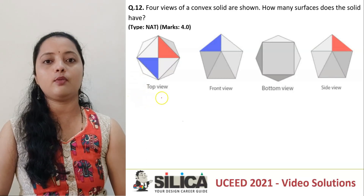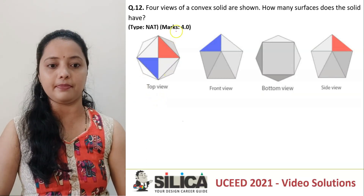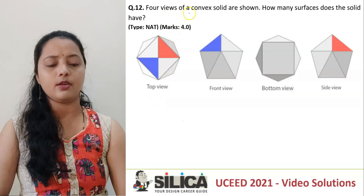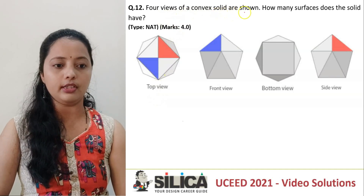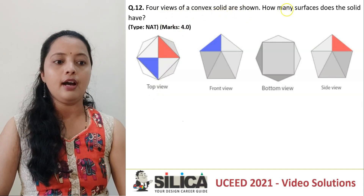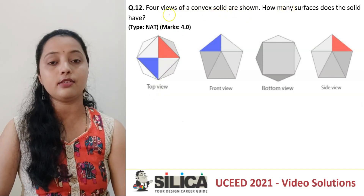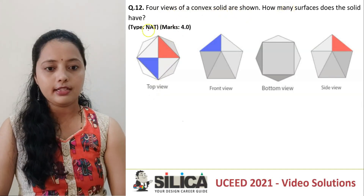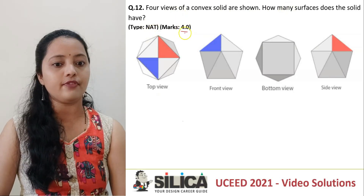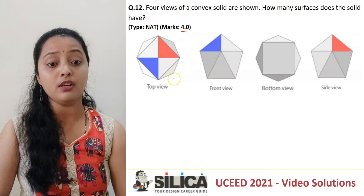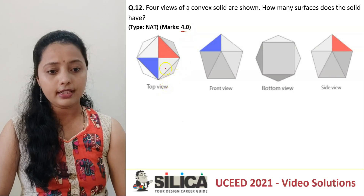Hello everyone. We will now see a question of UC 2021 paper. It says 4 views of a convex solid are shown. How many surfaces does the solid have? This is a NET question which is for 4 marks in the UC paper. So let's see how do we deal with it.